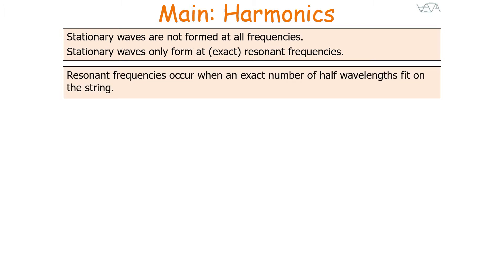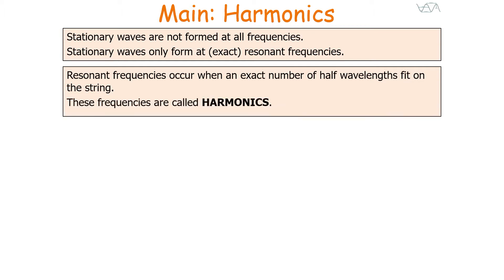Resonance frequencies occur when an exact number of half wavelengths fit on the string that the stationary wave is produced on. These resonant frequencies are also called harmonics.